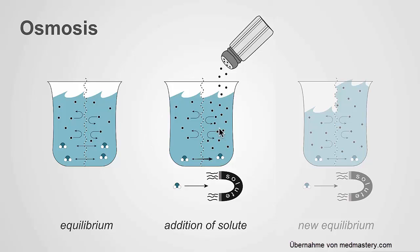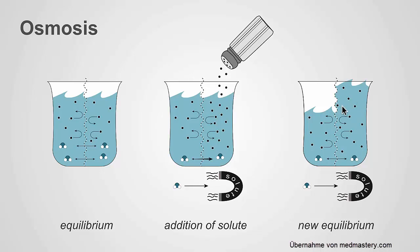If we add solute to one side of this beaker, that's going to increase the osmolality on that side, and that solute will act like a magnet drawing water across the semi-permeable membrane, such that there is increased water on that side. This increases the volume of that side, and it will continue to increase until the osmolality is equal on both sides of the membrane, returning you to equilibrium — except now you have increased volume on one side compared to the other.